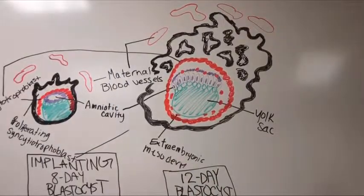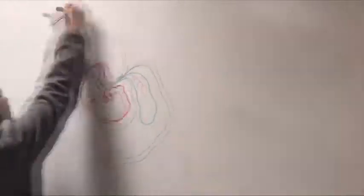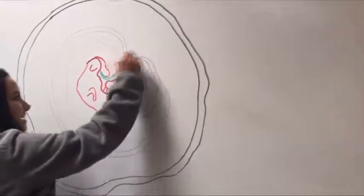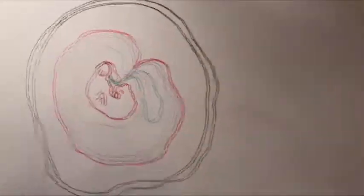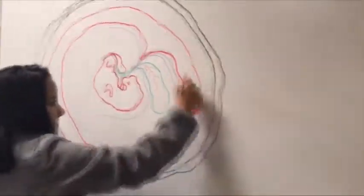Another process that takes place would be gastrulation, which is the formation of the germ layer consisting of three different layers. The ectoderm, which are cells that remain on the embryo's surface. The endoderm, which are the first cells to enter. And the mesoderm, which are the cells being pushed laterally at the surfaces forming a layer.